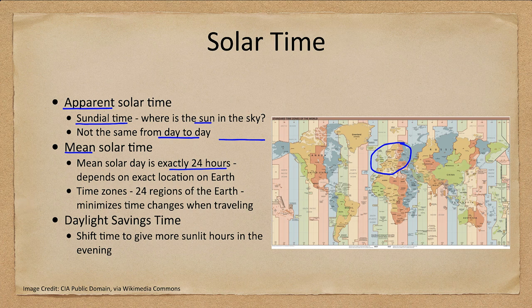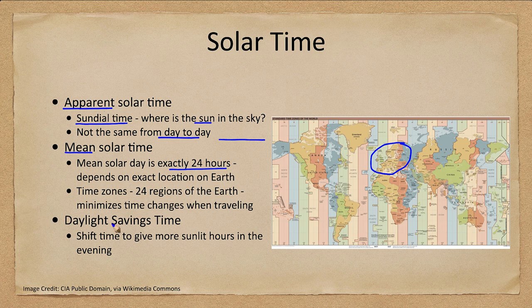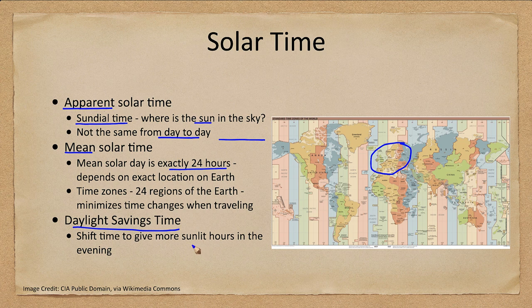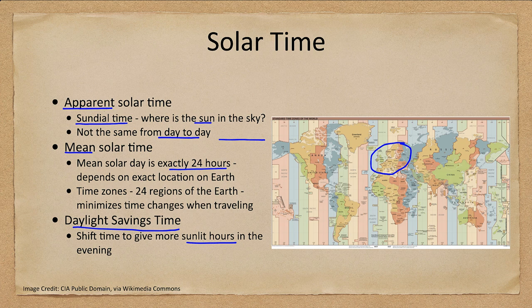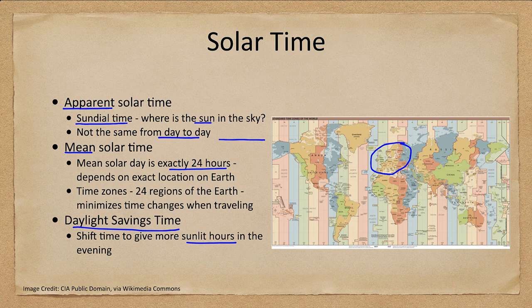But most smaller countries are set so they will have a single time zone for the entire country. And then we also mention daylight savings time and all this is is a shifting of the time to put sunlit hours in the evening. It really actually has nothing to do with astronomy so we really won't look at it anymore here. It just is a shifting, it doesn't change anything, it isn't based on anything astronomical.